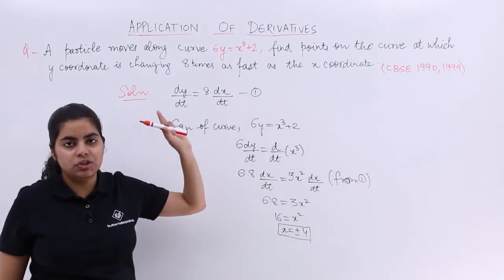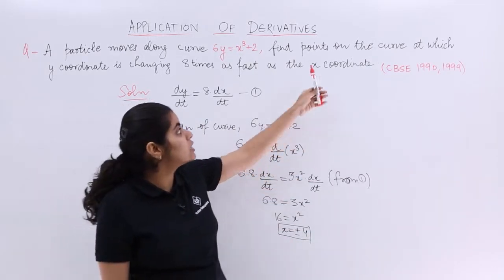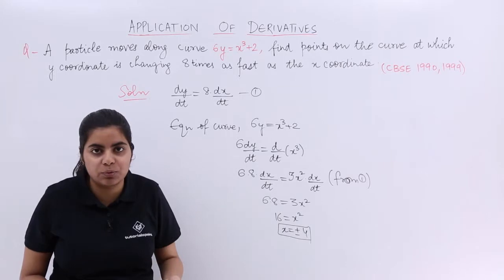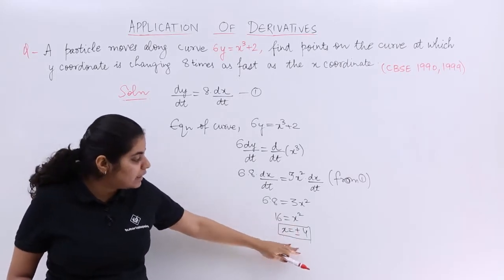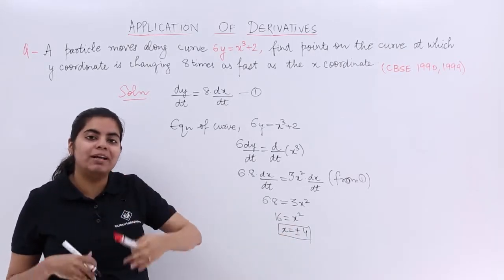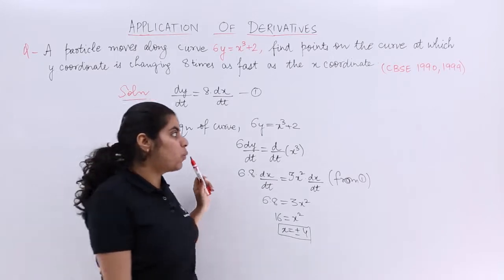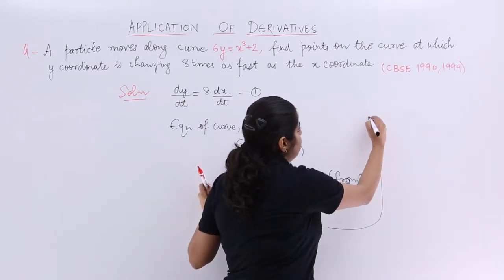Now some students leave the answer here, which is not right. Why? Because they asked you about the points, not about the abscissa only. So you have to find the x coordinate also, you have to find the y coordinate also. So from here, let's move further to the solution.